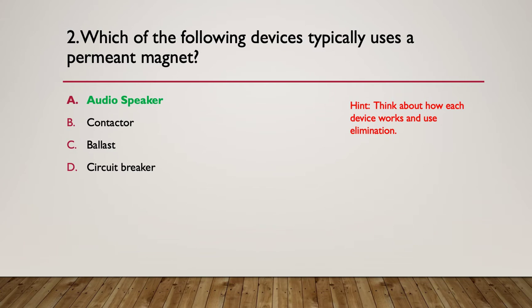The answer is A, an audio speaker. An audio speaker has a fixed magnet and it has a coil, an electromagnet that operates from an electrical signal which converts that electrical signal back into mechanical energy, airwaves that operates the speaker. A contactor has an electromagnet in it. A ballast is a restrictive or AC resistive device used to control the current in lighting. And a circuit breaker has a magnetic trip, but it's an electromagnet. They're all electromagnets of some kind except for A, which has a permanent magnet.